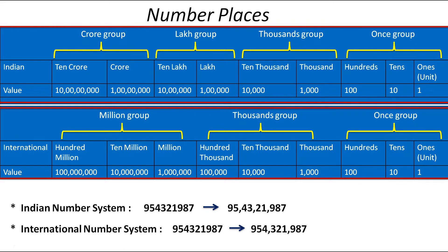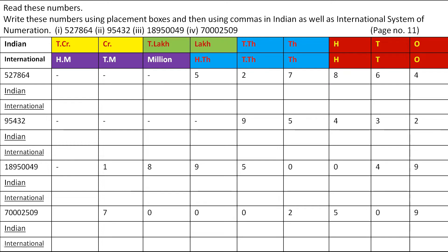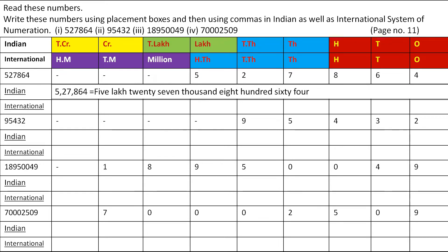Now let's move to the question. You have the question: read these numbers, write them using placement boxes and then using commas in both the Indian and International System of Numeration. Let's put these numbers in the place value chart. Here I have highlighted the groups. The first number is 5,27,864. Here, 5 comes in the lakh group and 27 comes in the group of thousands, and 864 comes in the group of 1s. So the number name in the Indian Number System is 5,27,864.